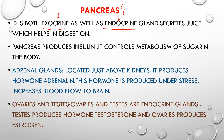Ovaries and testes are also endocrine glands. Testes produce male sex cells, like sperm. Female sex cells are produced by the ovaries.